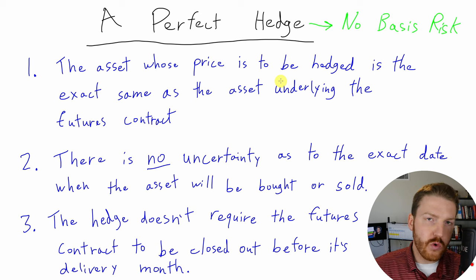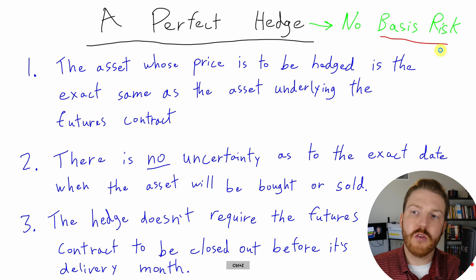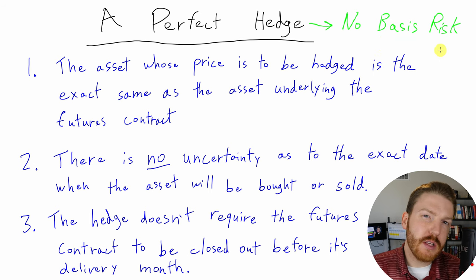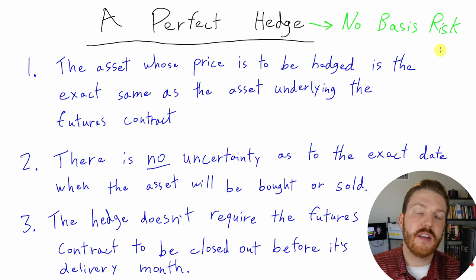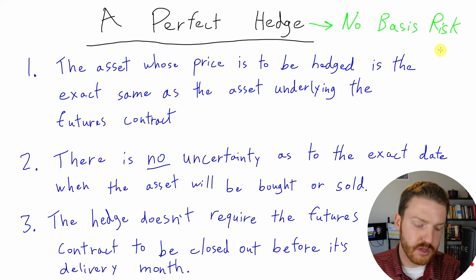However, if any one of these three conditions is not satisfied, there will be basis risk. And in the real world, there typically is not a perfect hedge that exists. So with derivative contracts, when used in hedging, there will be basis risk in most real world scenarios.